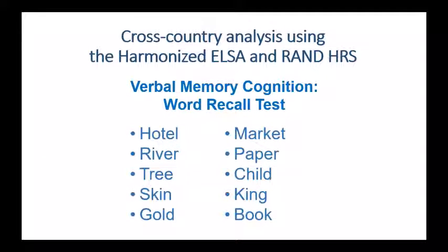Let's talk about cognition. Cognition is multidimensional, and we're going to be looking at the verbal memory part of cognition — a word recall test conducted in both ELSA and the HRS which is very comparable. The respondent is given a set of 10 words, and the interviewer says: I'm going to say 10 words for you, and then I'm going to ask you to recall them back to me. The words are: hotel, river, tree, skin, gold, market, paper, child, king, and book. Can you read these back to me? That's the first part of the test.